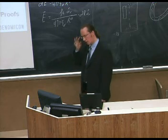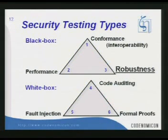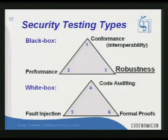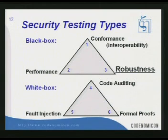Different security testing types can be simply categorized into black box testing and white box testing. You have levels of gray in between, but simplified, you have black and white box. In black box testing you don't care about the source code at all. In white box testing, you take all the benefits you can have from the availability of source code.